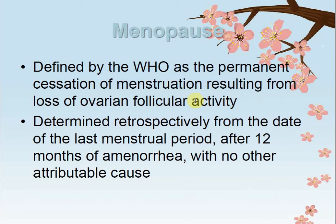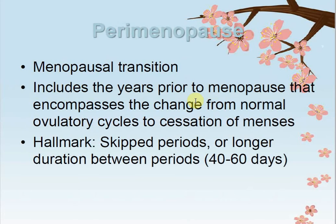When ovarian follicular activity reduces, egg production and reproduction are reduced. It is determined retrospectively from the date of the last menstrual period after 12 months of amenorrhea with no other attributable causes. When a woman's last menstrual circle occurred and one year or 12 months have passed without any spotting or period, she is considered to be in menopause.